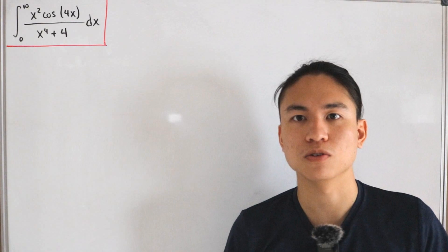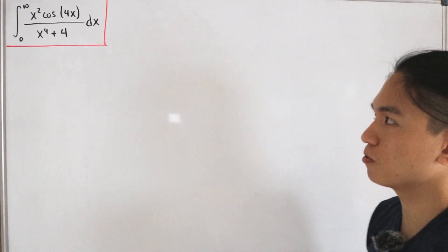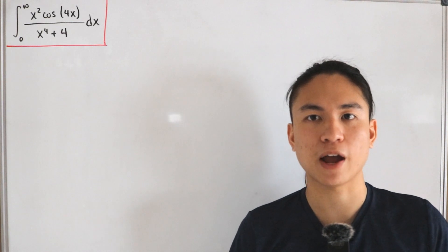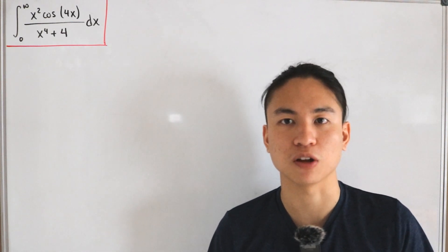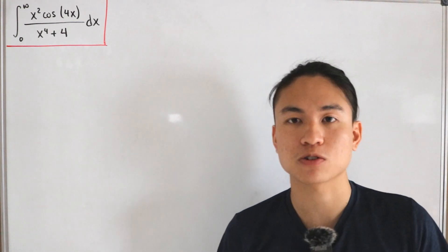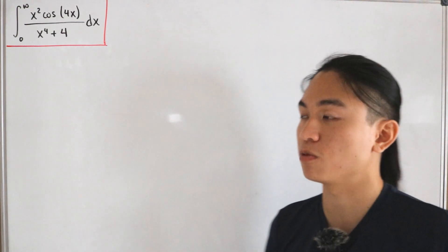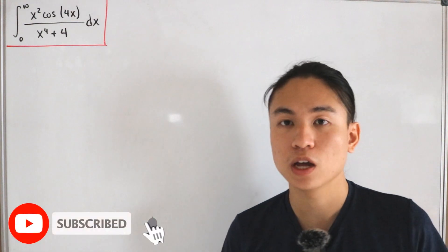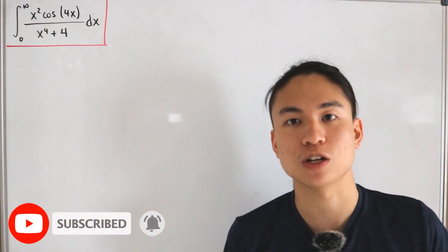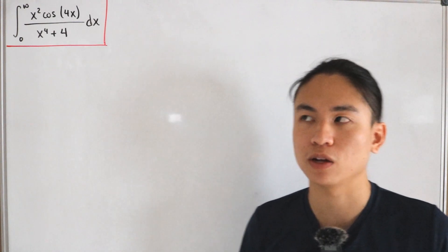We have an improper integral from zero to infinity of x squared times cosine of 4x divided by x to the power 4 plus 4, dx. This is a perfect exercise when dealing with complex analysis, specifically an improper integral combined with polynomials and trigonometric functions, which means we have to apply residue theory to tackle it.